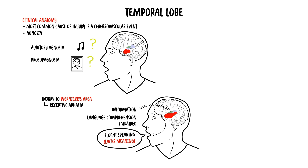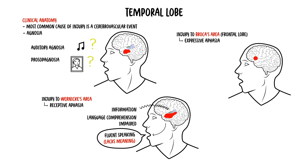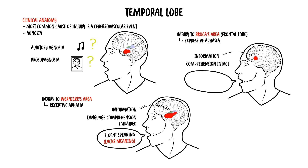Whereas injury to Broca's area, which is in the frontal lobe, causes expressive aphasia. Patients here are able to comprehend and process what is being said to them, but they are unable to express themselves properly, and so it presents with halting and effortful speech. They look very frustrated because they are unable to say what they want.